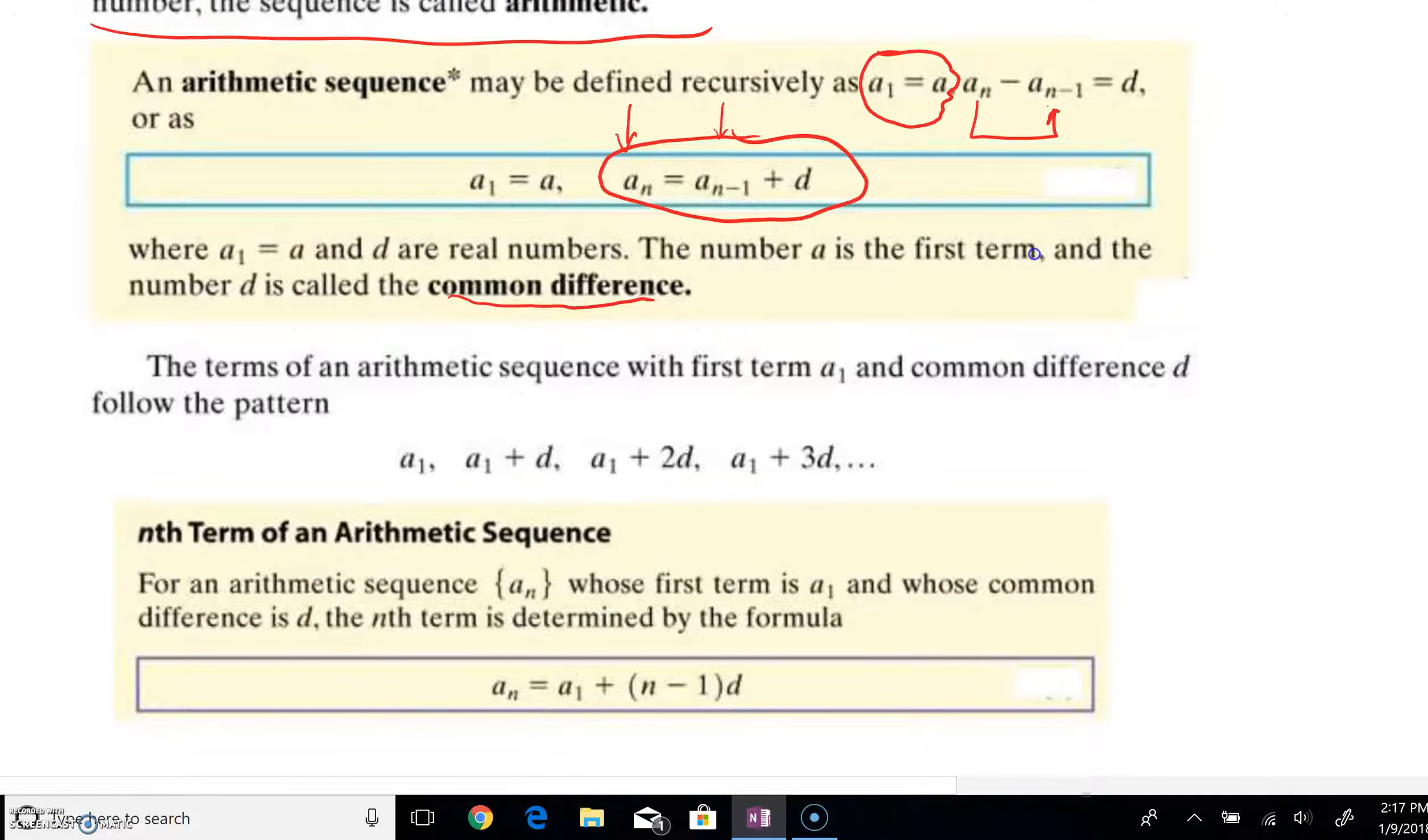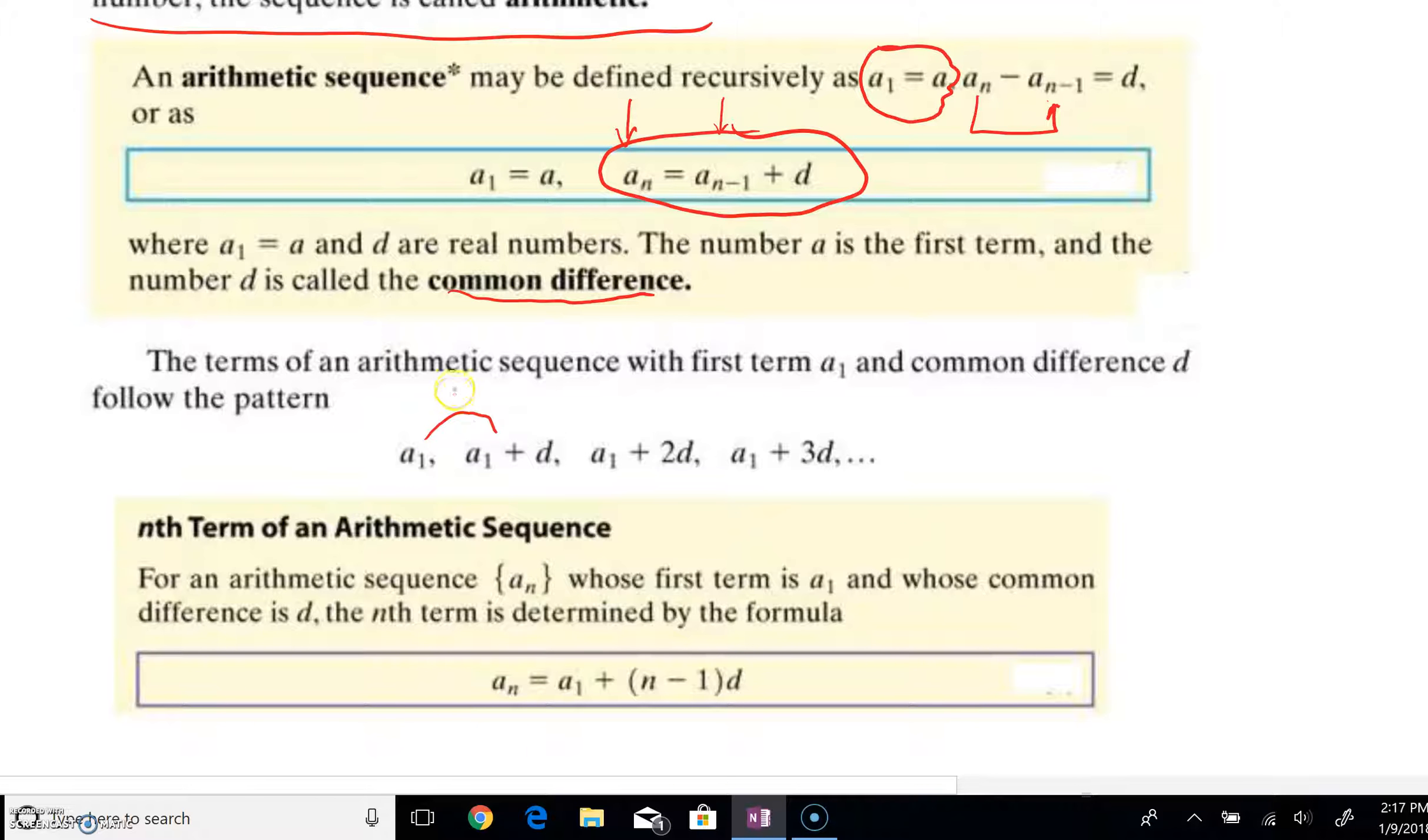Well, what you're going to notice is if you're continually adding d, if you're always adding that same constant, what you're really going to see is you could see that for your first term, you'd have a sub 1. For your second term, you'd have a sub 1 plus d. Your third term, well, you'd add another d. You'd just continue to add that, so now you'd have 2d. To get to your fourth term, you'd add a d yet again, and 2d plus 1d is 3d. So you can begin to pick up a pattern.